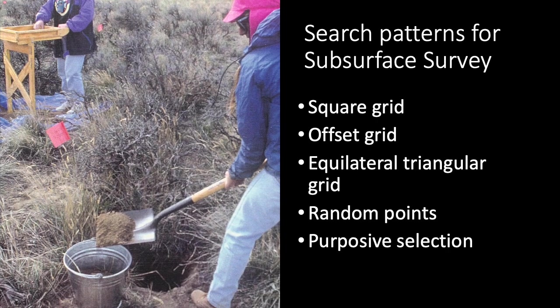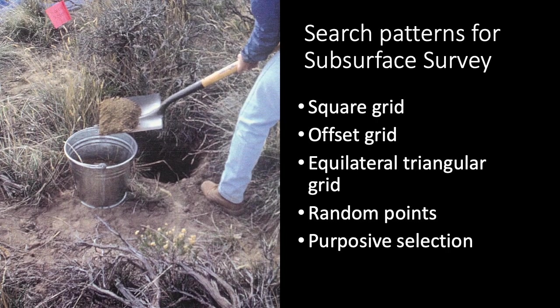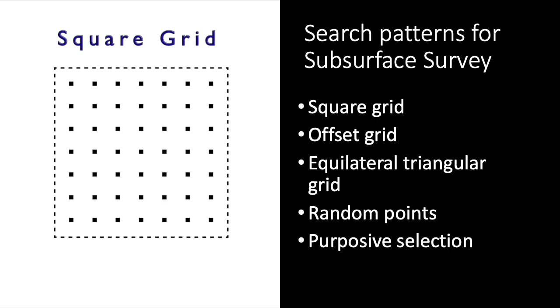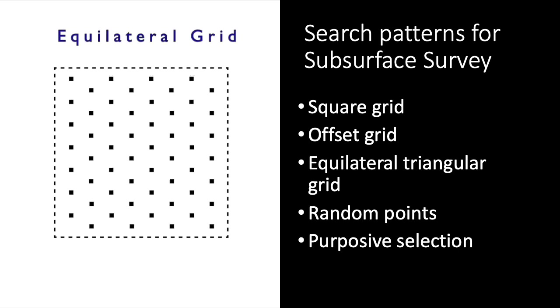We also have lots of options for subsurface survey, even though a square grid is the one most commonly used. Some of the main options include an offset grid and an equilateral triangular grid. These same grid options are also potentially useful for chemical survey, magnetometry, and resistivity survey.